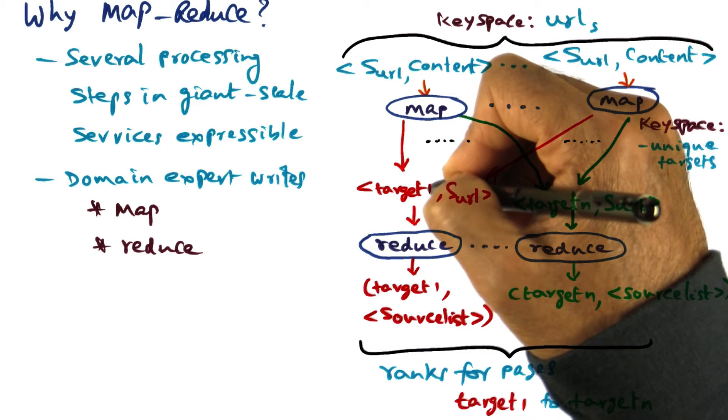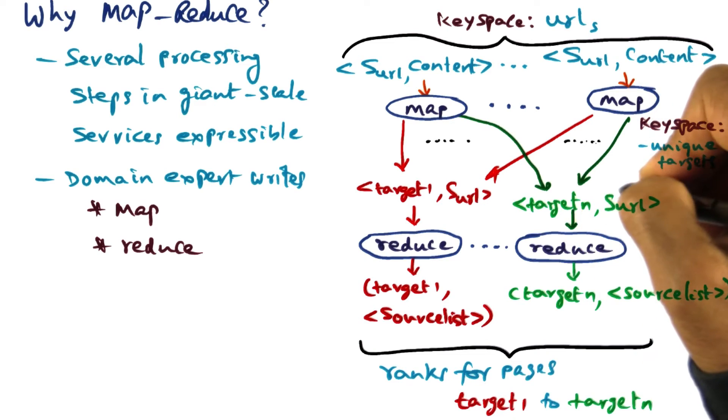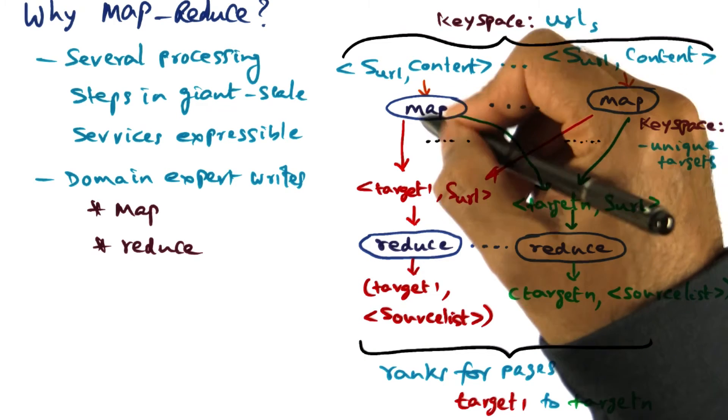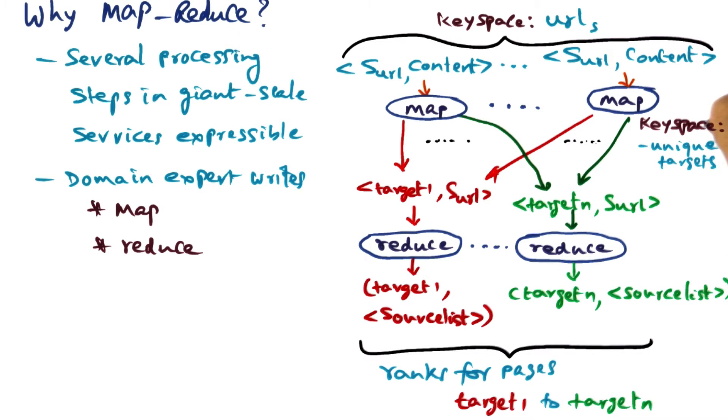Maybe it is looking for a particular URL target one, another URL target two, and so on target n. And that's what each of these mappers are doing. So the key space that is output from the mapper is unique target URLs.